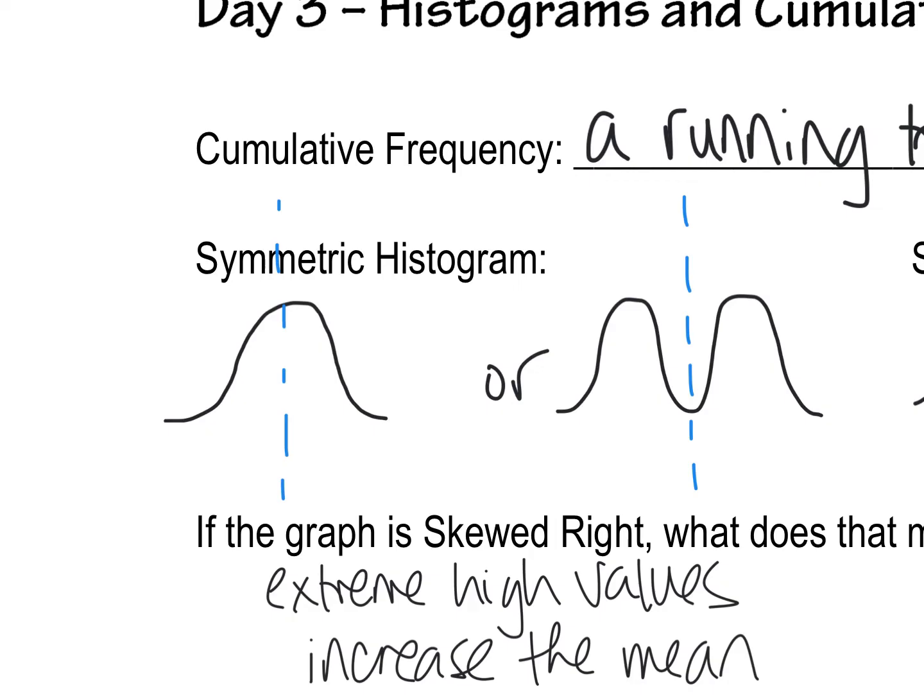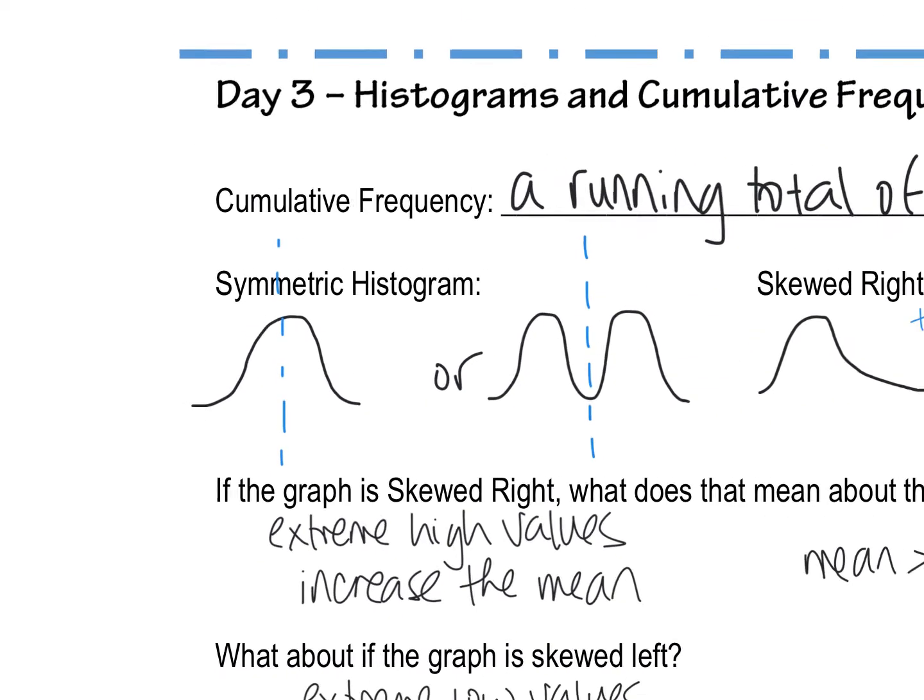It's probably not ever going to be perfectly symmetric. That's why in stats we usually use roughly symmetric, approximately symmetric, or somewhat symmetric to refer to graphs that look like this.